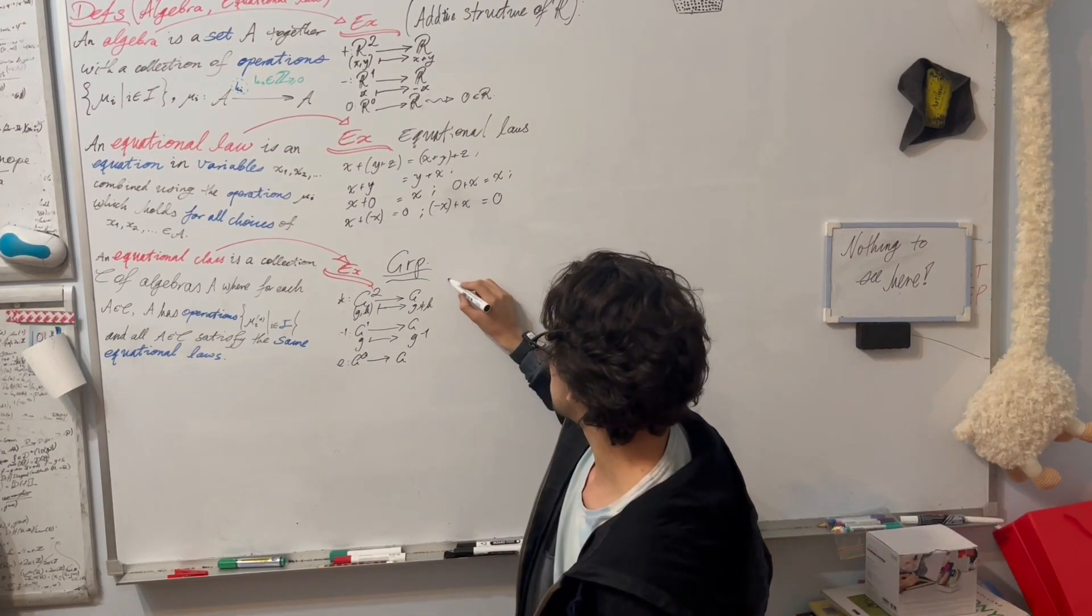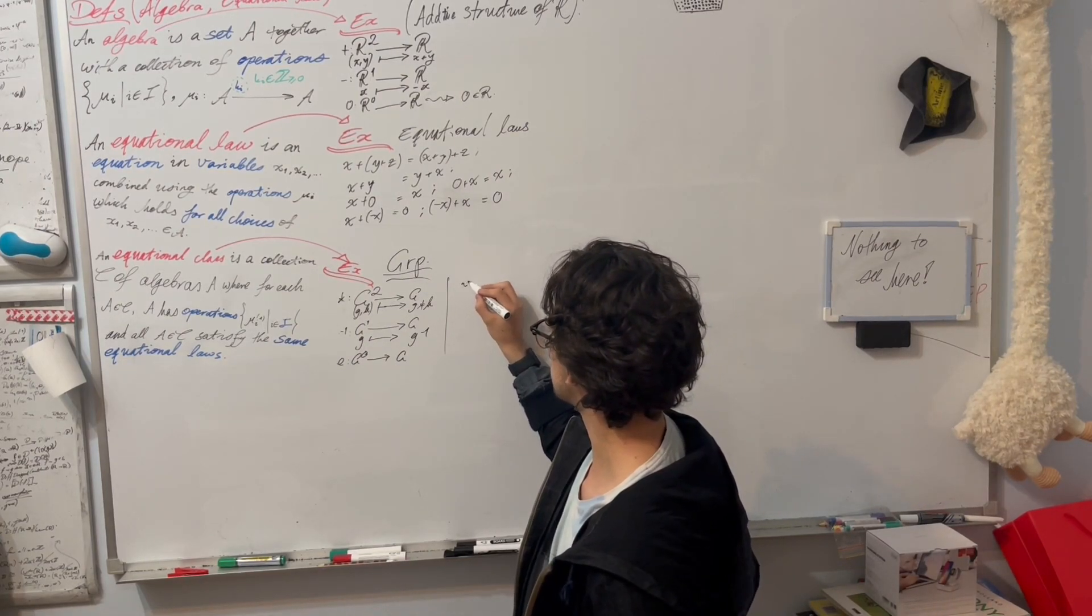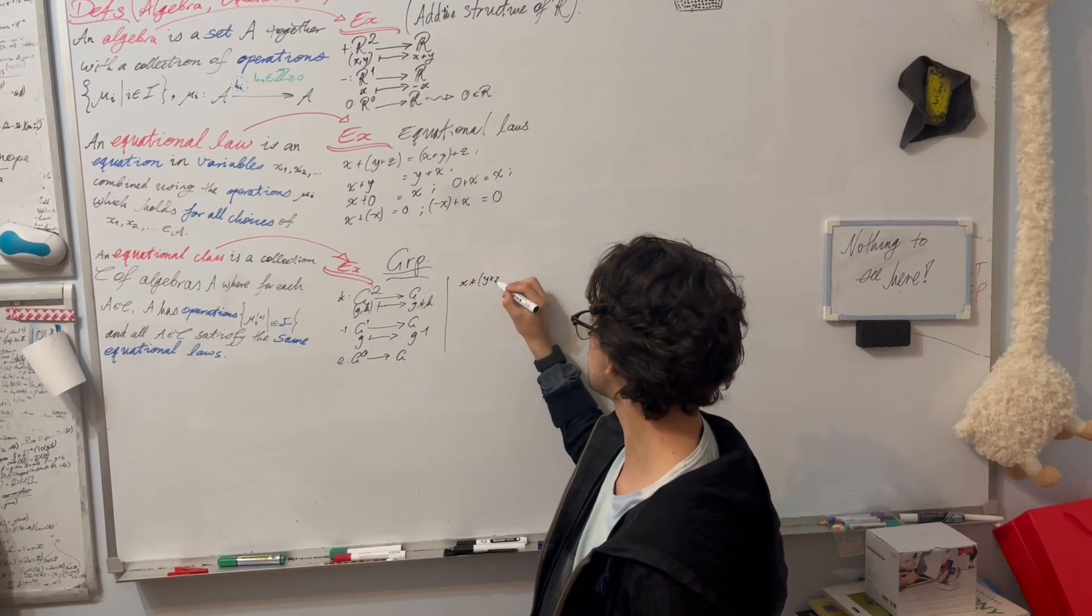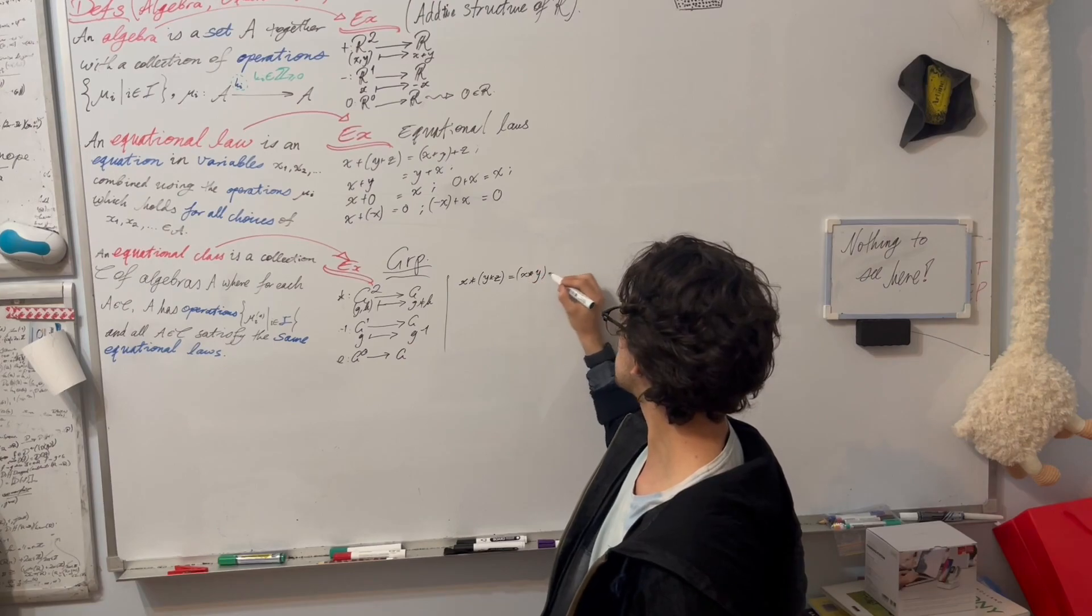And these are subject to the equational laws of associativity. x star (y star z) is going to be the same as (x star y) star z.